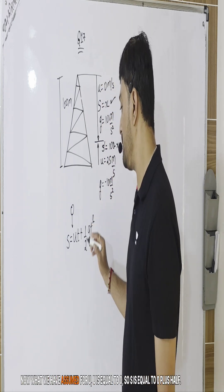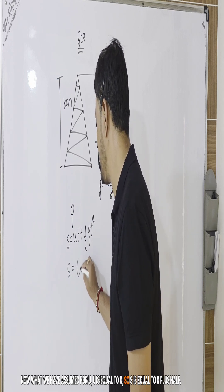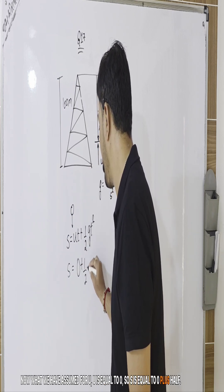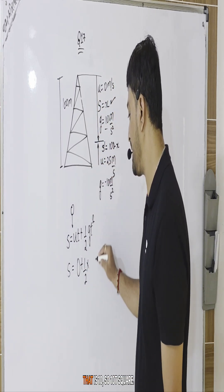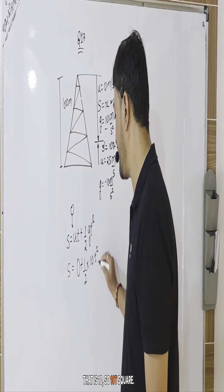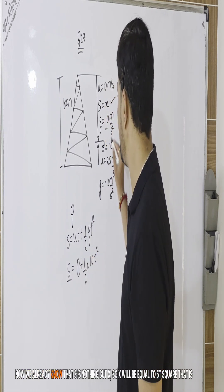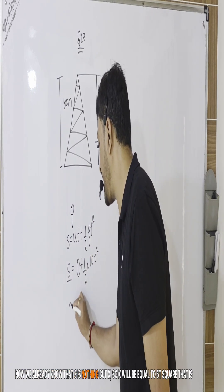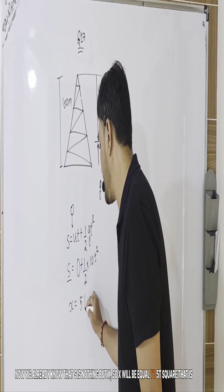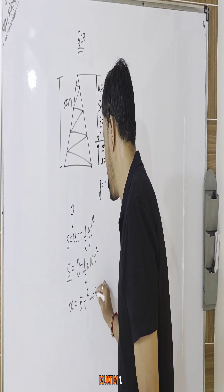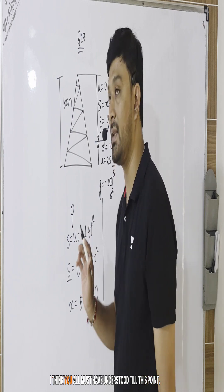Now what we have assumed as u? u is equal to zero. So s is equal to zero plus half. What is g for this case? That is 10. So 10 t square. We already know that s is nothing but x, so x will be equal to 5 t square. That is equation 1.